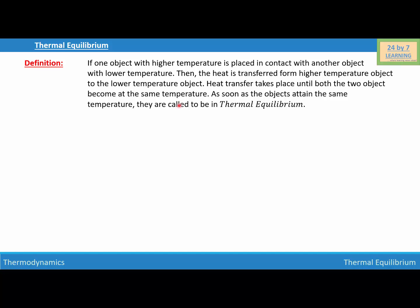In other words, if two objects with different temperatures are placed in contact with each other, heat will transfer from the higher temperature body to the lower temperature body. The flow of heat will continue until both bodies are at the same temperature. As soon as the bodies reach the same temperature, there is no flow of heat from one body to another. Then both bodies are said to be in thermal equilibrium.